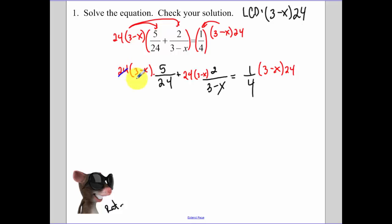The 24s cancel, so you're just left with 5 times 3 minus x. The 3 minus x's cancel, so I'm left with plus 48. 4 and 24 cancel to be a 6, so we have 18 minus 6x. Now I simplify and solve. You've been doing this since algebra 1.